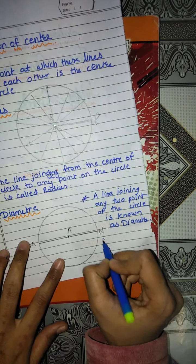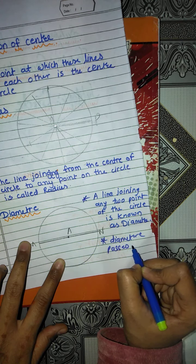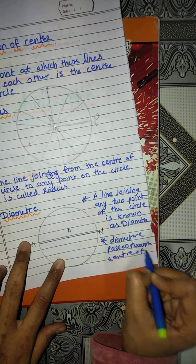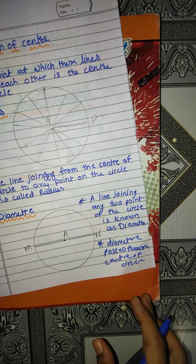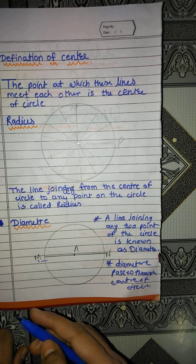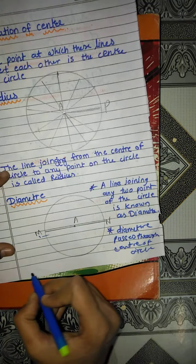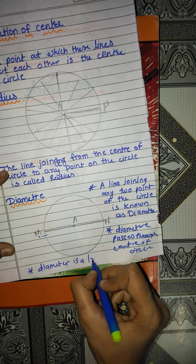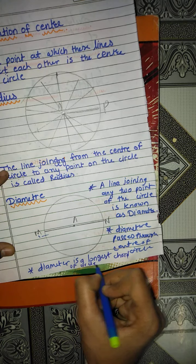Diameter passes through the center of the circle. Hence, the line MN is the diameter of the circle. Also remember: diameter is the longest chord of the circle.